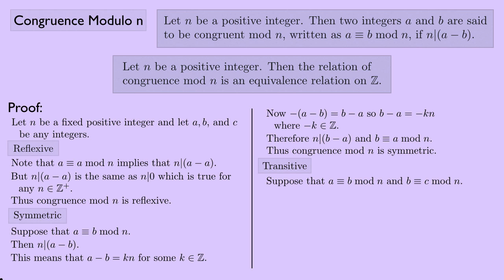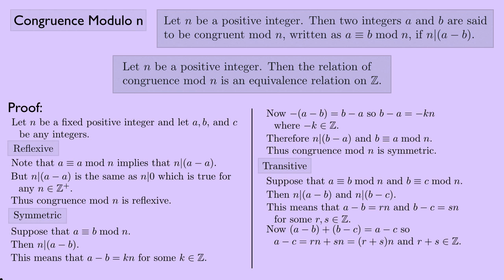For transitive: suppose a ≡ b (mod n) and b ≡ c (mod n). Then n divides a minus b and n divides b minus c, so a minus b equals r times n and b minus c equals s times n for integers r and s. Adding: a minus c equals rn plus sn equals (r plus s) times n, and r plus s is an integer. Therefore n divides a minus c, and a ≡ c (mod n). Since congruence mod n is reflexive, symmetric, and transitive, it is indeed an equivalence relation on ℤ.